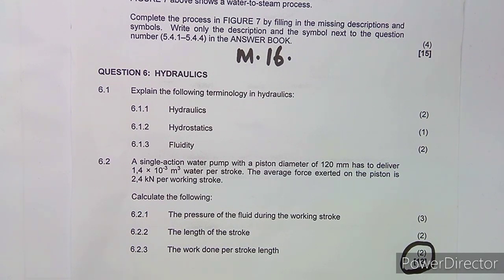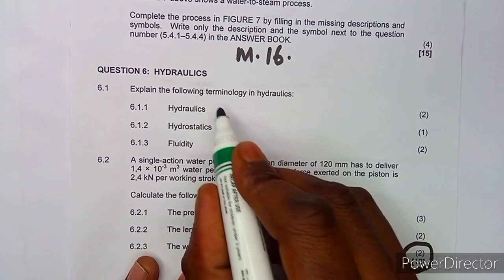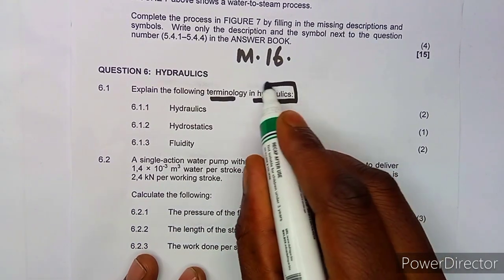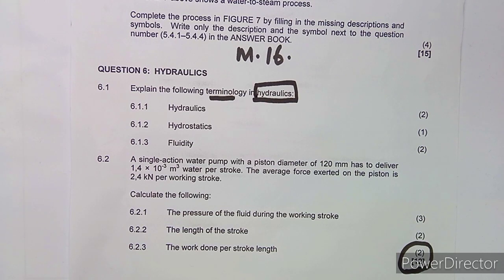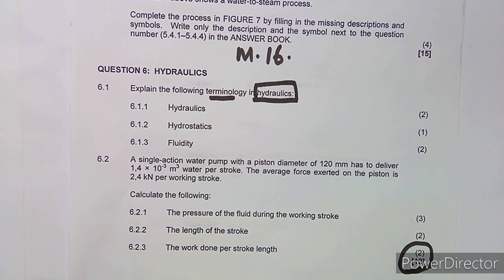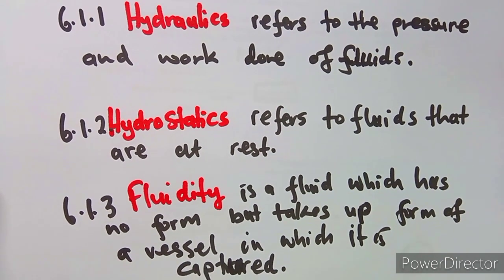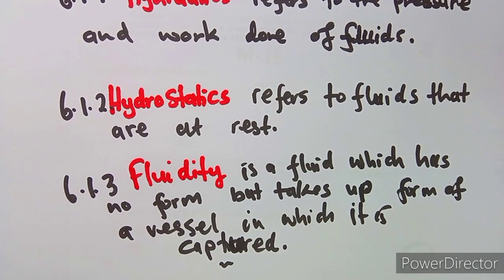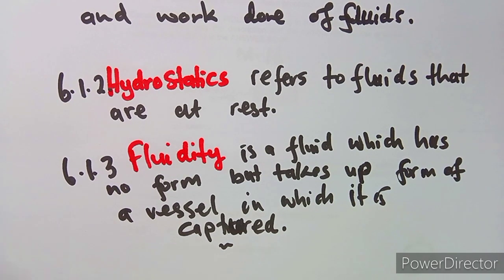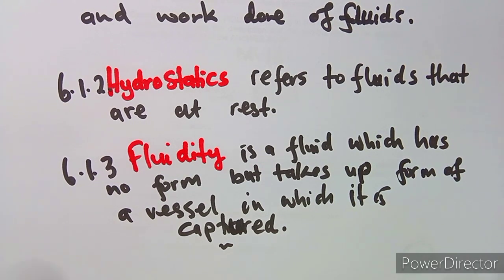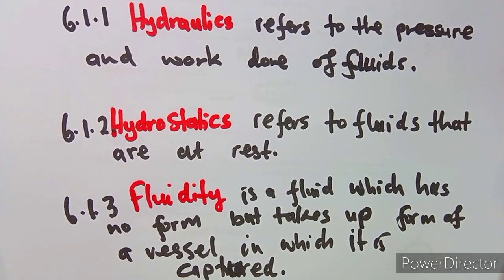Question 6.1 asks you to explain the following terminology in hydraulics. The first term is hydraulics itself, which refers to the pressure and work done of fluids. Hydrostatics refers to fluids at rest. Fluidity is a fluid which has no form but takes up the form of the vessel in which it is captured or stored.